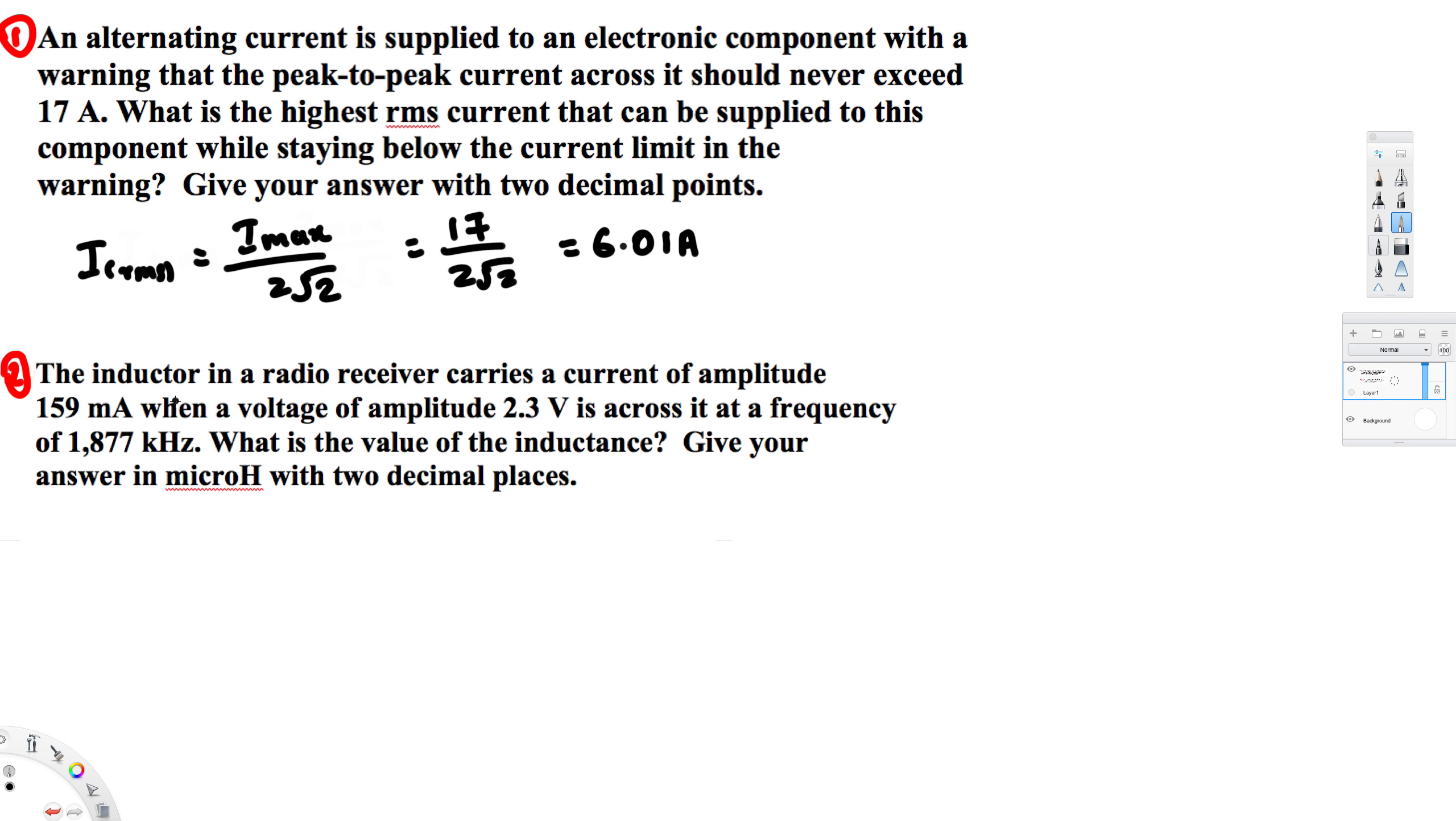Now let's look at the second problem. This question is asking: the inductor in a radio receiver carries a current of amplitude 159 milliampere when a voltage of amplitude 2.3 volt is across it at a frequency of 1877 kilohertz. What is the value of the inductance?